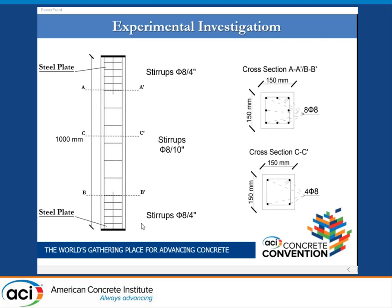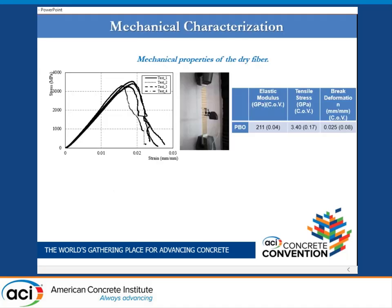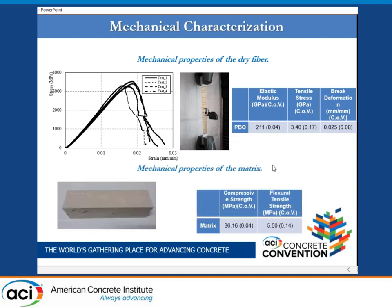The steel plate was used to maintain parallelism between the loading ends of the columns. The first characterization test was conducted in two phases. In the first phase, only PBO dry fiber was tested by a tensile test. On the right, we can see the test setup adopted. To evaluate strain, an extensometer with a base length of 15 millimeters was used. At the bottom, we have the matrix results from compression and flexural tensile strength tests.